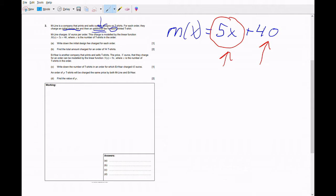So this is just a quick intuition of the problem. The 5x is going to be the additional fees and the 40 of course has to be the other fee which is the initial design fee. So for part A, they ask us to write down the initial design fee charged for each order. So that is going to be the 40. So the answer for part A is 40 euros.